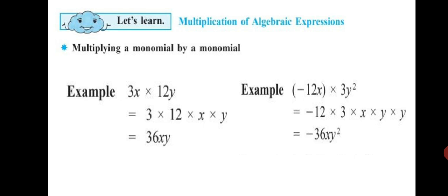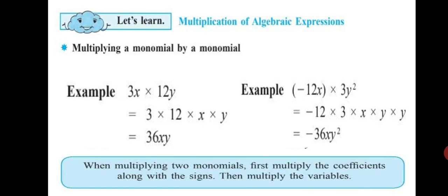So what do we have to do? When multiplying two monomials, first multiply the coefficients along with the signs, then multiply the variables. This is the simple method we are going to follow.